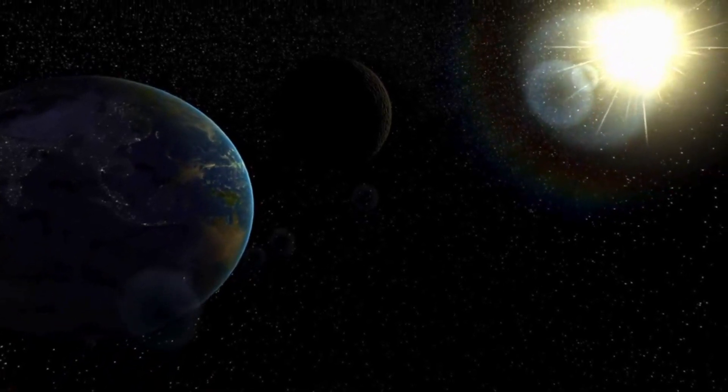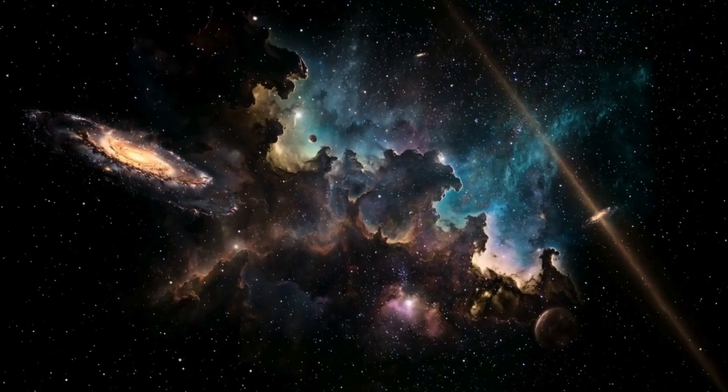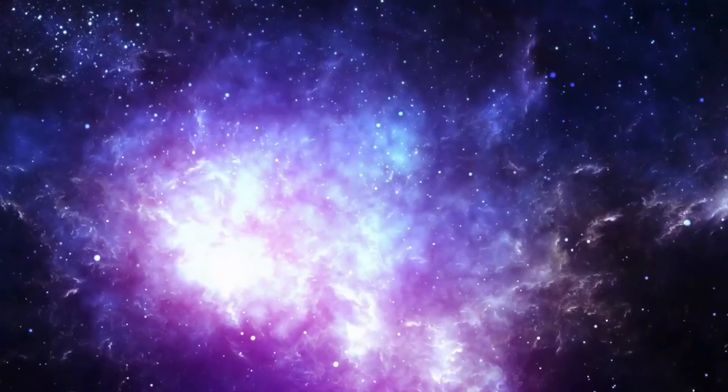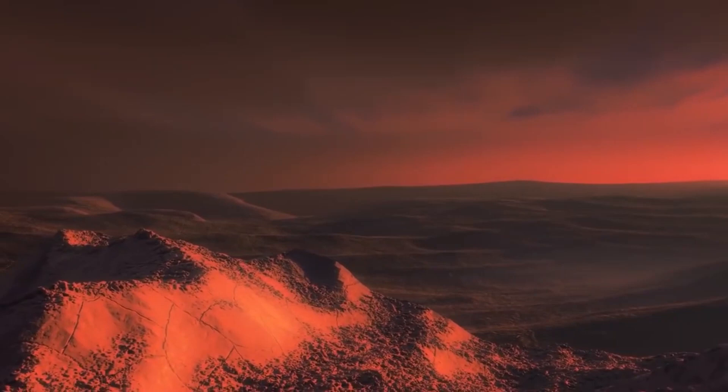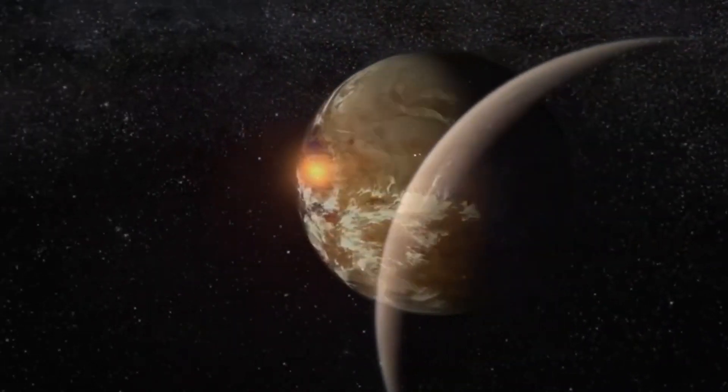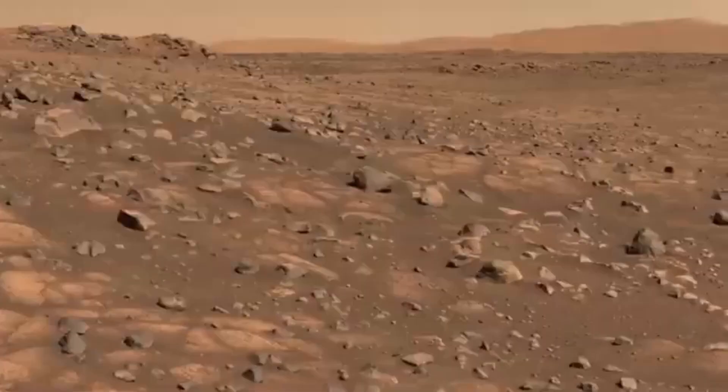Proxima Centauri B is a planet orbiting the closest star to Earth. It is ironic that the planet Centauri B looks so much like Earth and is so close to us. The scientific community has been surprised by Michio Kaku's discovery of planets even more favorable for life than Earth in our galaxy, known as habitable exoplanets.